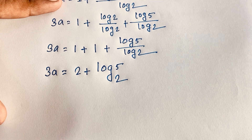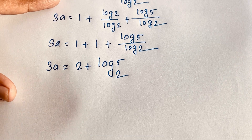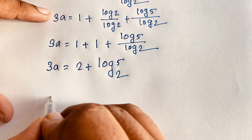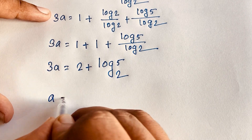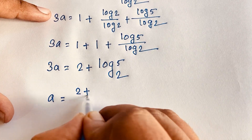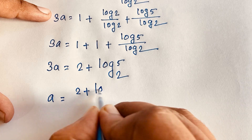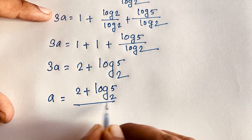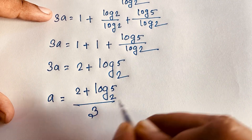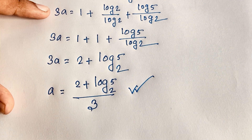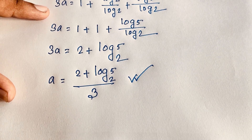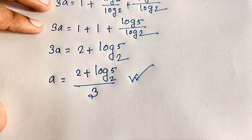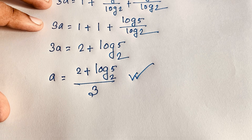Our target is to find A. If I divide both sides by 3, we will find out A is equal to 2 plus log 5 base 2, all over 3. So this is our final answer in this Math Olympiad question.